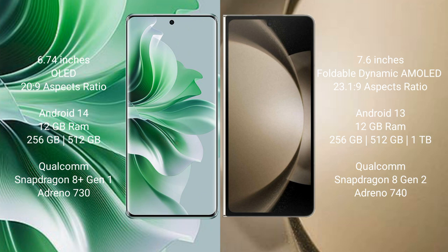Oppo Reno 11 Pro comes with 12GB RAM, 256GB and 512GB internal storage, Qualcomm Snapdragon 801 processor, GPU Adreno 730. Samsung Galaxy Z Fold 5 comes with 12GB RAM, 256GB, 512GB, and 1TB internal storage, Qualcomm Snapdragon 802 processor, GPU Adreno 740.